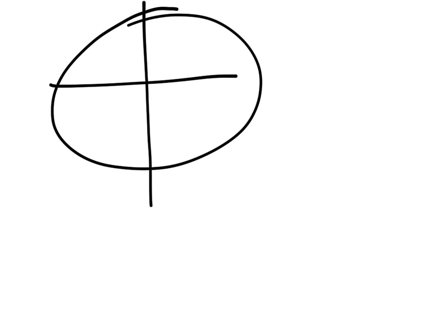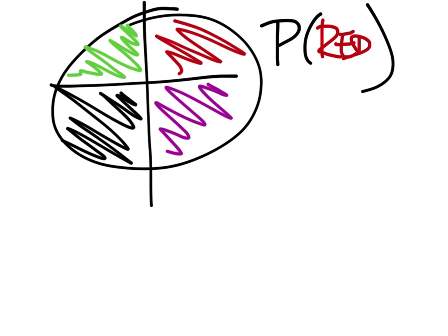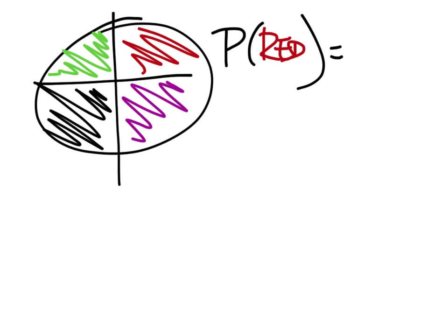If I take a spinner with four sections colored differently, then theoretically we could say the probability of getting red would be what? Nothing's been done yet. All we're doing is looking at what will happen if we were to spin this many times or even one time. What would the chances be that you spin red? There are four different choices and one of them is red, so it'd be a one-fourth chance of spinning red.